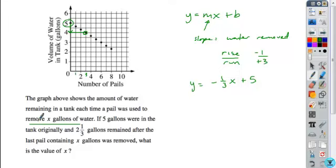The negative sign is kind of indicated by that term removed, so our answer is simply going to be the slope 1 third. And so, 1 third of a gallon is removed for each pail.